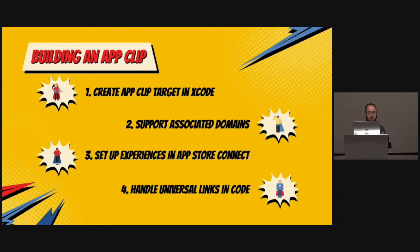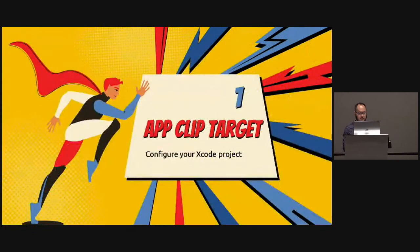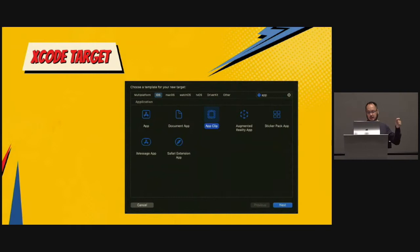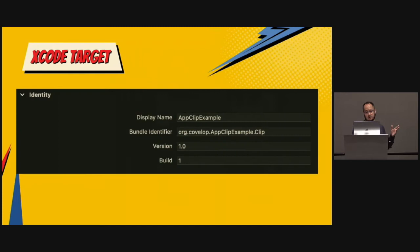Now I'm going to walk you through exactly how to build an app clip from a developer perspective and point out some gotchas along the way. There are four main steps: create the app clip target in Xcode, support associated domains, set up experiences, and handle universal links in code. For the app clip target, go to Xcode, create a new target — App Clip is a choice, just pick that. It's going to ask you if you want to activate the app clip scheme — yes, you do.